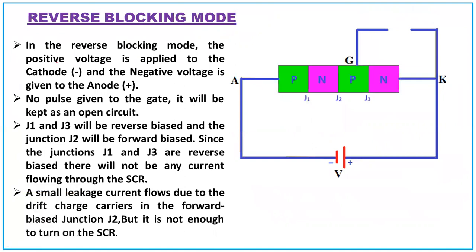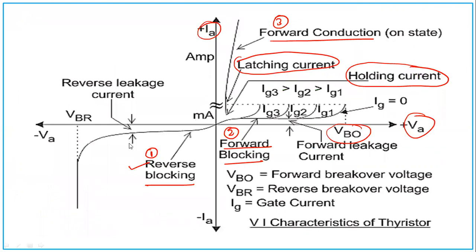In the reverse blocking mode, positive voltage is applied to the cathode and negative to the anode — no pulse is given to the gate. J1 and J3 will be reverse biased, so there will not be any current through the SCR. However, a small leakage current flows due to drift charge carriers in the forward-biased J2 region, but it is not enough to turn on the SCR. After a particular reverse breakover voltage, the anode current increases abruptly.